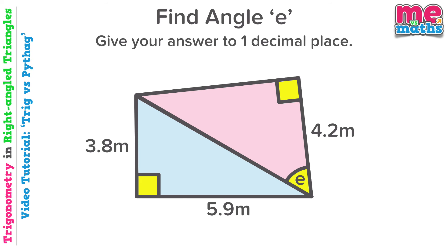If we look at the pink triangle that angle E is in, we can't answer the question yet. We can use trig to find a missing angle, but we need to know two sides, and at the moment we only know one.